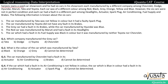Sanjeev owns a used car showroom and he had 6 cars in his showroom, each manufactured by a different company among Chevrolet, Dodge, Hyundai, Maruti, Tata and Toyota. Each car was of a different color among red, black, grey, orange, yellow and blue.